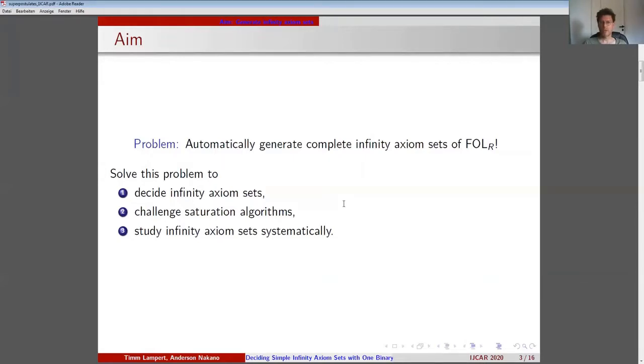FOLR is a well-known reduction class for the satisfiability problem. We want to keep things as simple as possible, so we abstain from identity, function symbols, and all relations except one binary relation. Infinity axiom sets are finite sets of sentences in prenex form which are only satisfiable in an infinite domain. An axiom set A of FOLR is complete if for any FOLR formula B, either B or non-B follows from A.